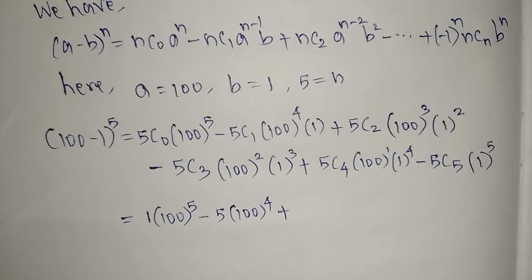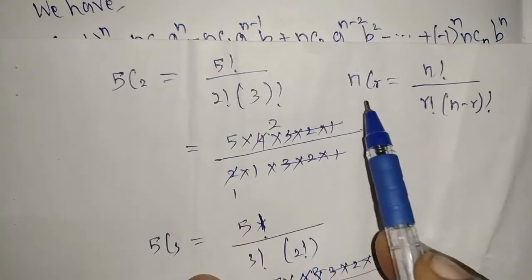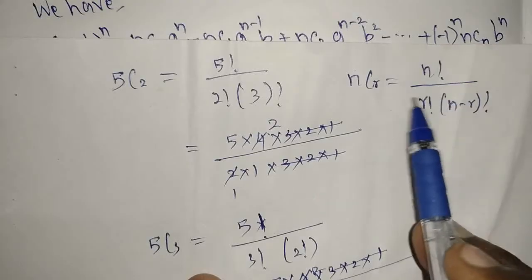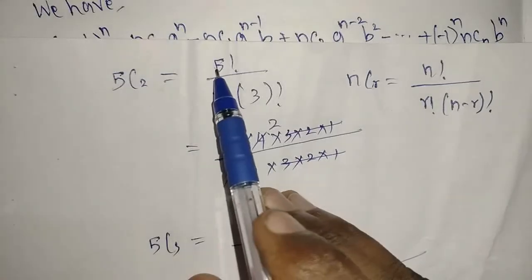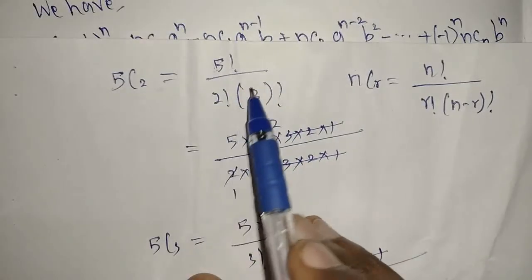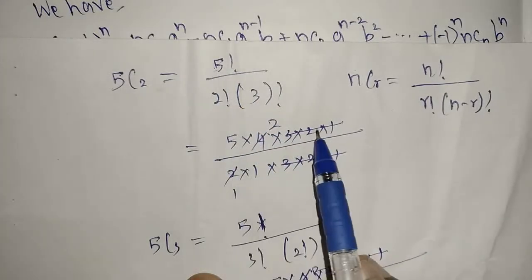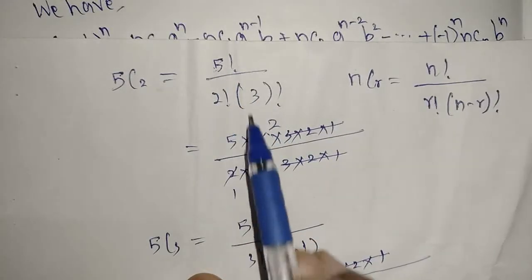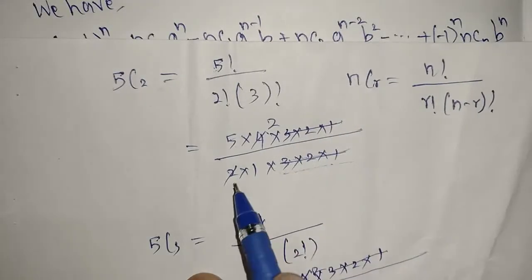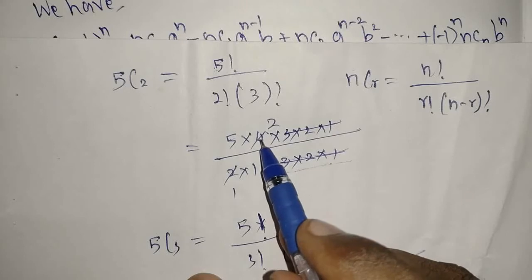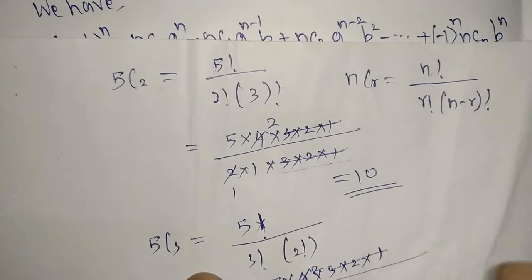Let me show how 5C2 is calculated. Using the formula nCr = n! / (r! * (n-r)!), we get 5C2 = 5! / (2! * 3!) = (5 * 4 * 3 * 2 * 1) / (2 * 1 * 3 * 2 * 1). The 3! cancels, leaving 5 * 4 / 2 = 10. So 5C2 = 10.